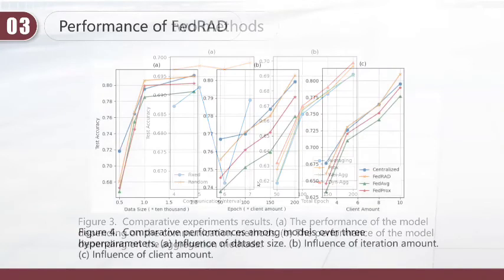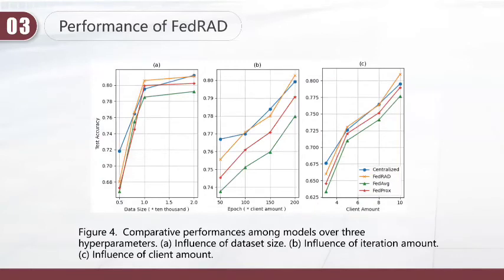Last, for Federated we proposed, we compared it with three algorithms: federated averaging, federated proximal, and centralized training, over three hyperparameters: data size, client amount, and total iteration, as shown in Figure 4a, b, and c respectively. Results show that Federated obtains higher accuracy than federated averaging and federated proximal under each condition we set.